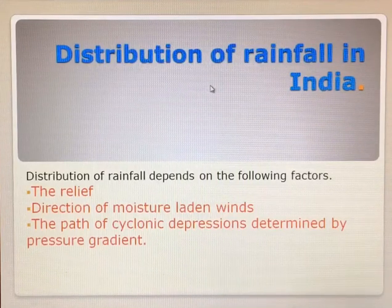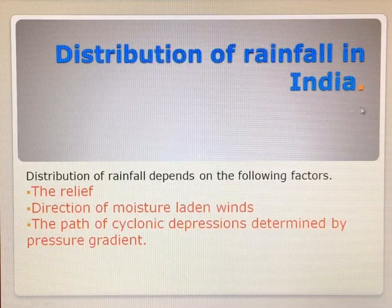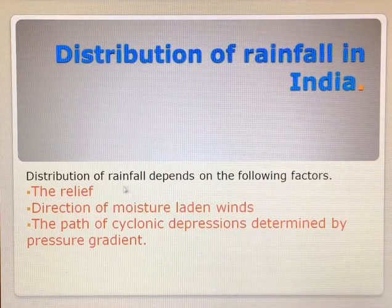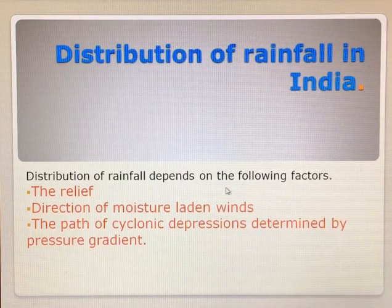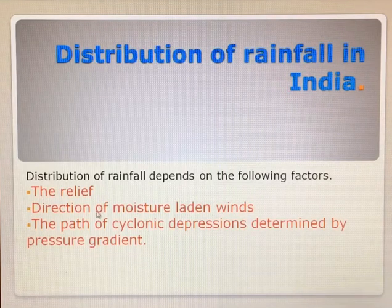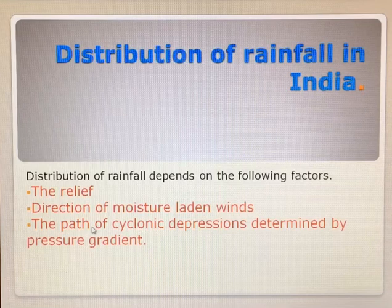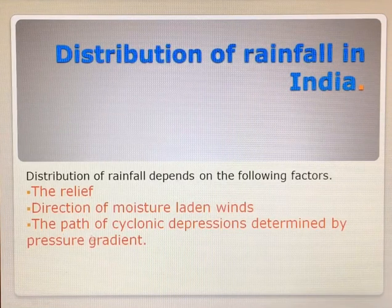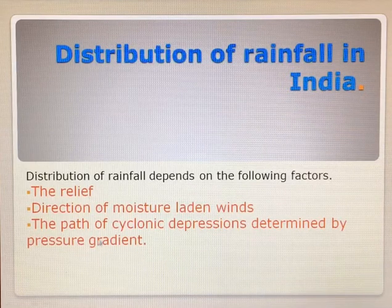The last part of the lesson is the distribution of rainfall in India. When you talk about distribution of rainfall in India, it depends on the following factors: the relief, the direction of moisture-laden winds, and the path of cyclonic depressions which are determined by the pressure gradient. One by one we will just go through these factors.